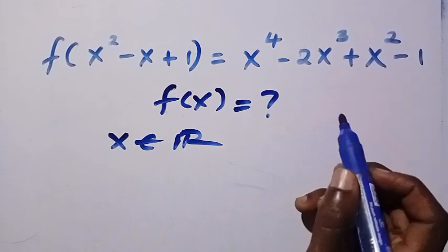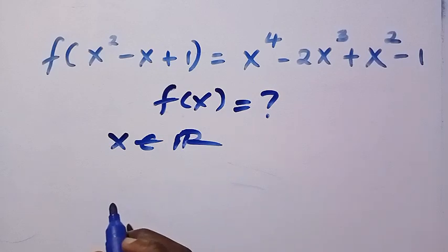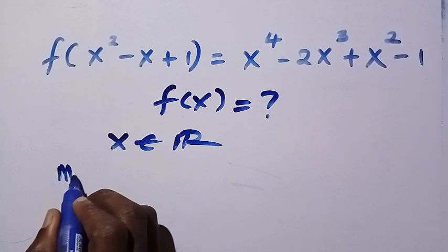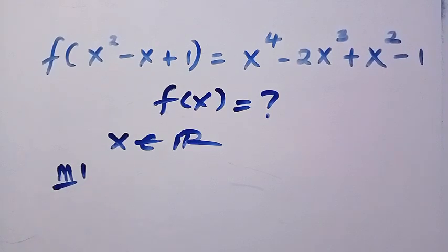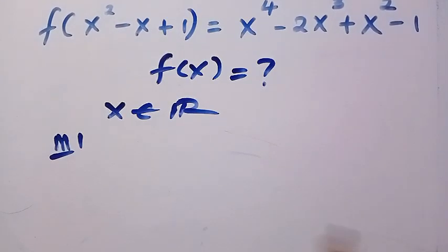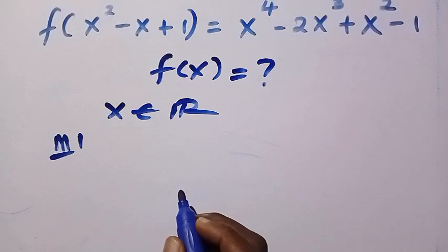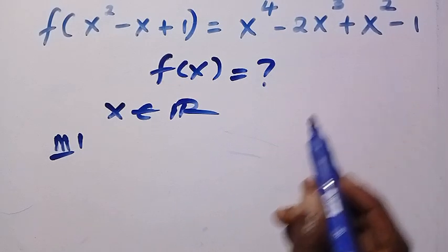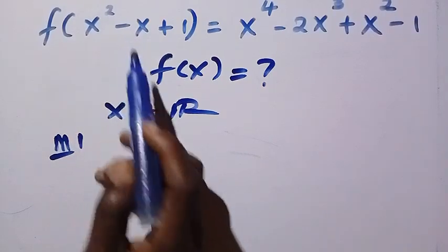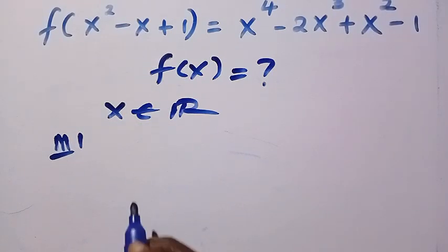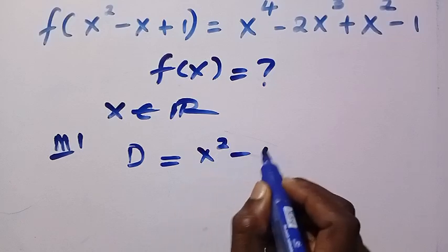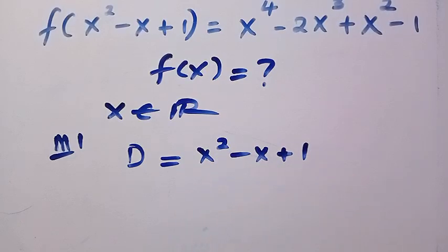To solve this, you can use two different methods. Let's see Method 1. We are going to apply algebraic manipulations as we try to manipulate the right-hand side to look like the domain, which is given as x squared minus x plus 1.